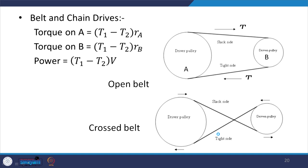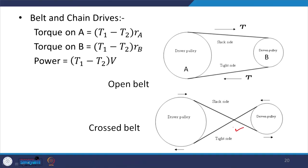Belt and chain drives transmit power over longer distances. There are open belt and cross belt configurations. Tension in the tight side is T1 and in the slack side is T2. Torque on pulley A is (T1 − T2) × radius of pulley B, and power equals the tension difference multiplied by velocity.